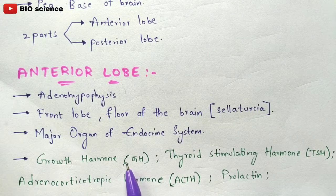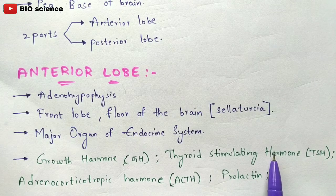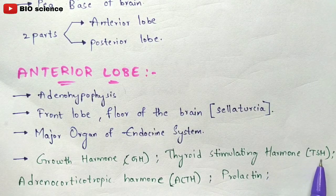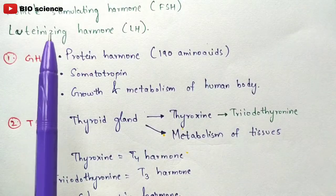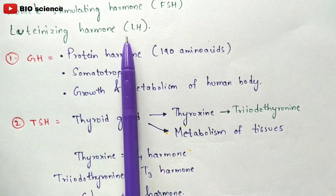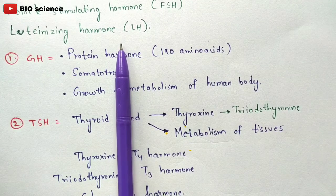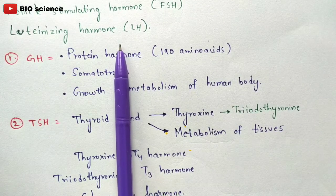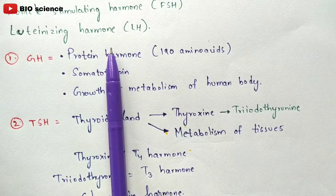The anterior pituitary gland secretes six hormones: growth hormone (GH), thyroid stimulating hormone (TSH), adrenocorticotropic hormone (ACTH), prolactin, follicle stimulating hormone (FSH), and luteinizing hormone (LH). These are the six hormones secreted by the anterior lobe of the pituitary gland.